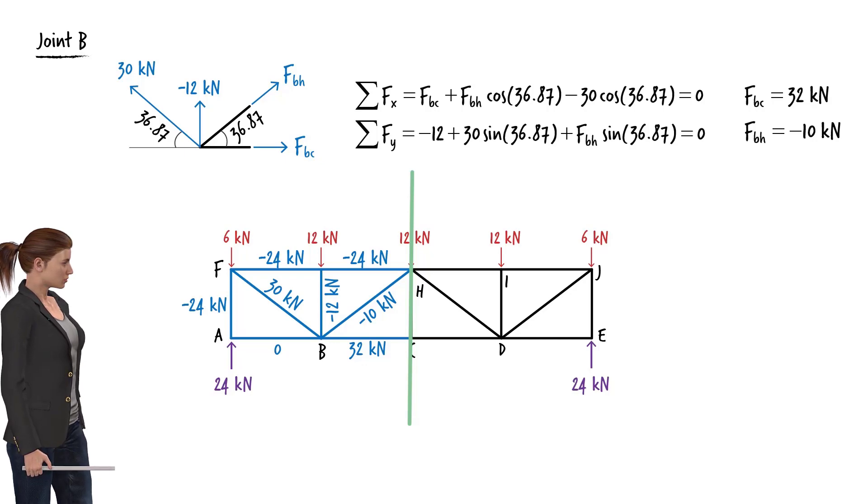So we can say that the force in member JE is identical to the force in member AF. This means JE carries a compressive force of 24 kN. Similarly, member IJ carries the same force as member FG, and so on.